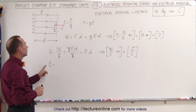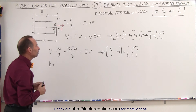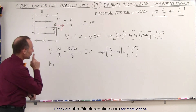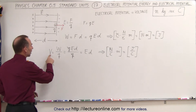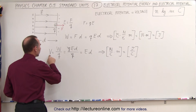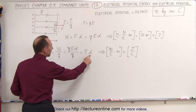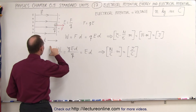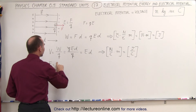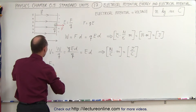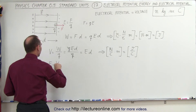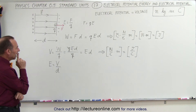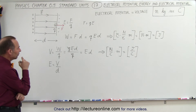Now we're going to come up with a different unit for electric field besides newtons per coulomb. We have the concept that potential is equal to the electric field times the distance traveled through it, or the electric field can be defined as voltage divided by the distance.